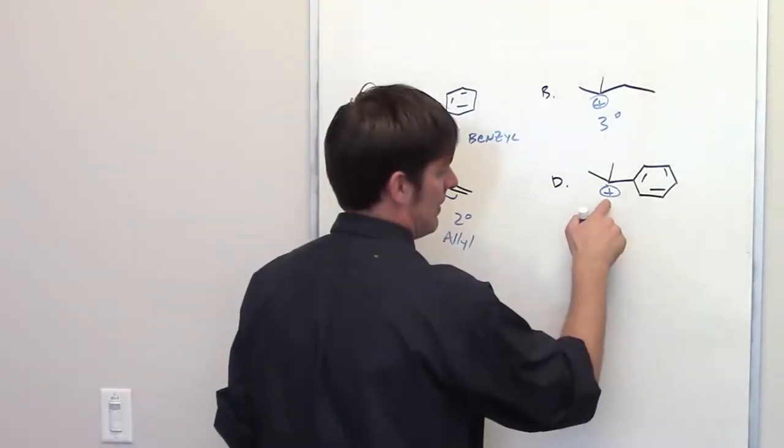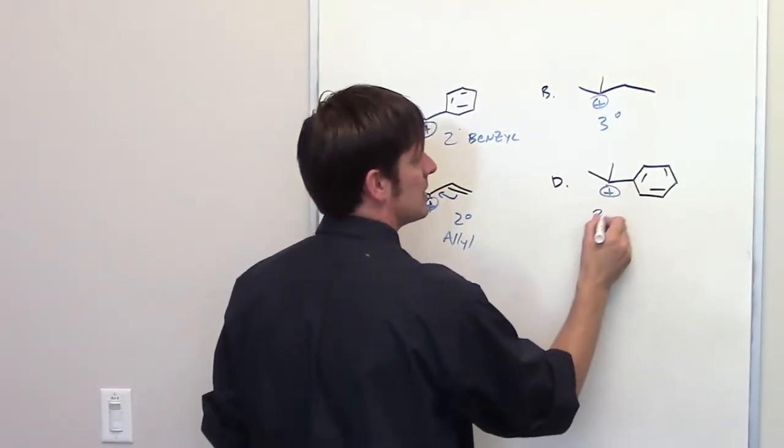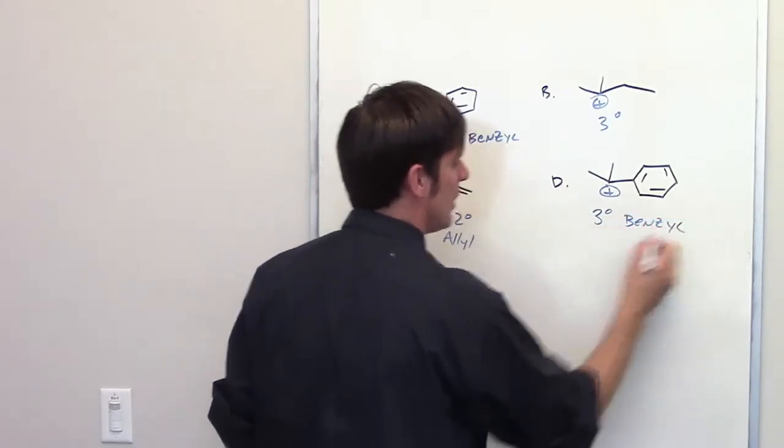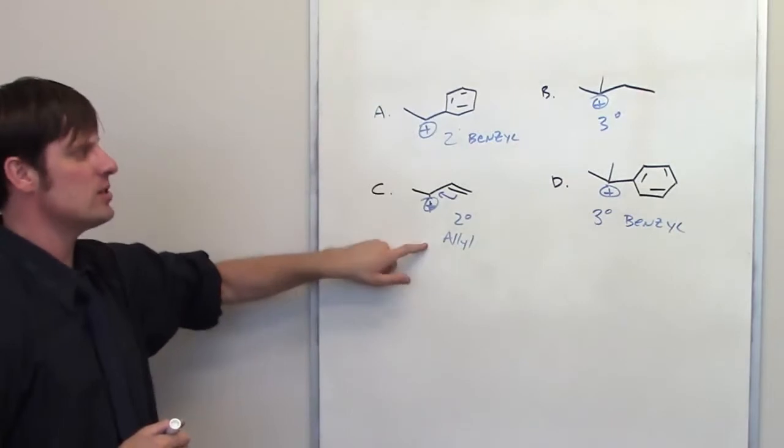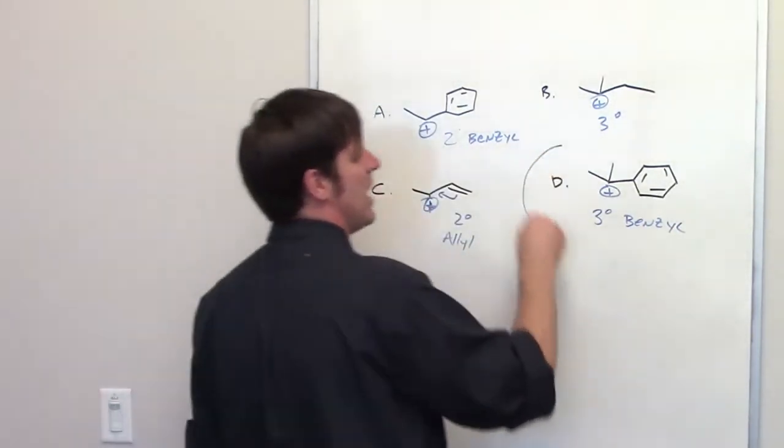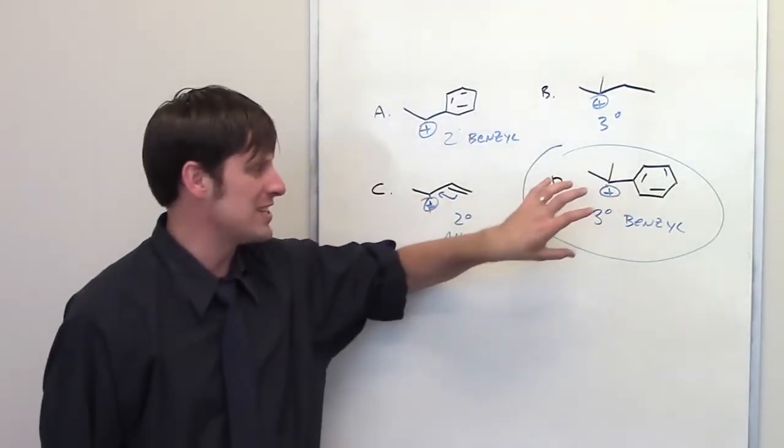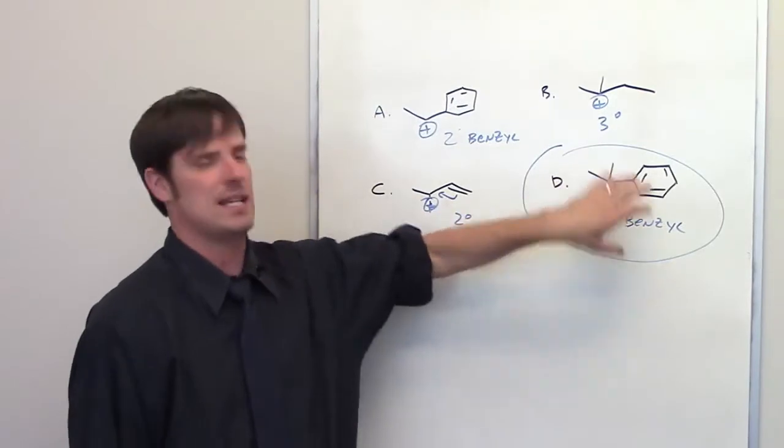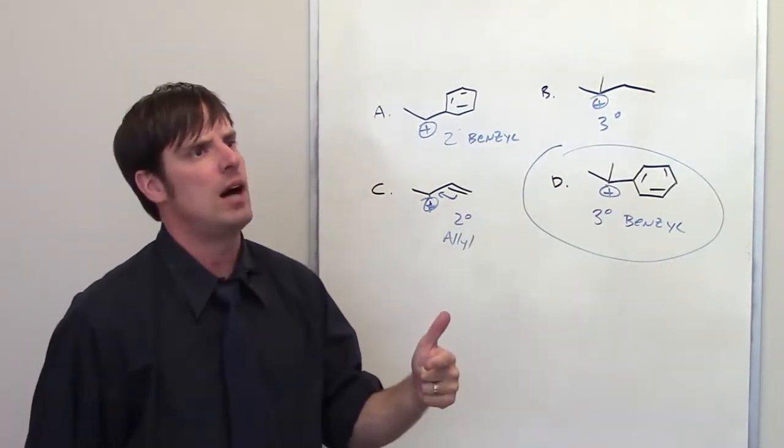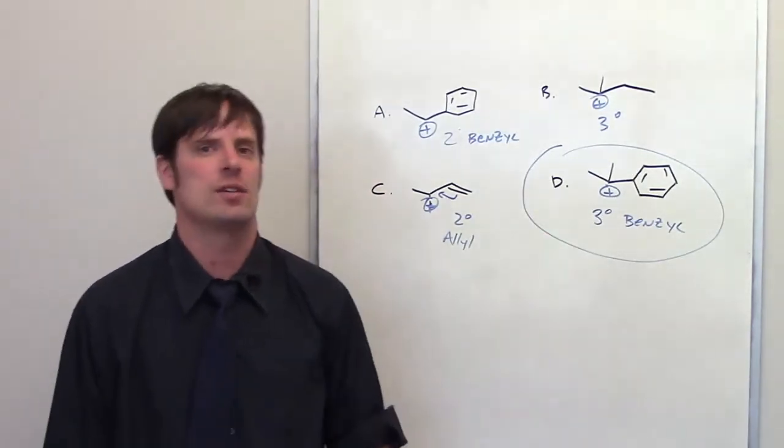Over here I've got another benzyl carbocation, but this one is bonded to one, two, three carbons. So it's tertiary. That is a tertiary benzyl. Which of all of these is the most stable: secondary benzyl, secondary allyl, tertiary, or tertiary benzyl? The answer hands down is tertiary benzyl. That is the most stable of all these carbocations and hence the molecule from which this one came will be the one that will form the fastest, will be the one that will undergo SN1 reactivity the fastest to form this carbocation and that is the correct answer, D.